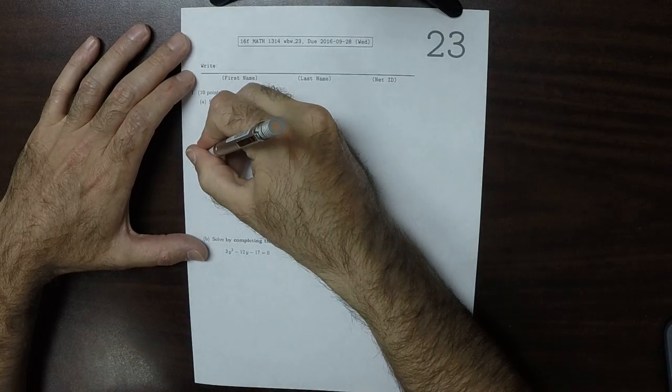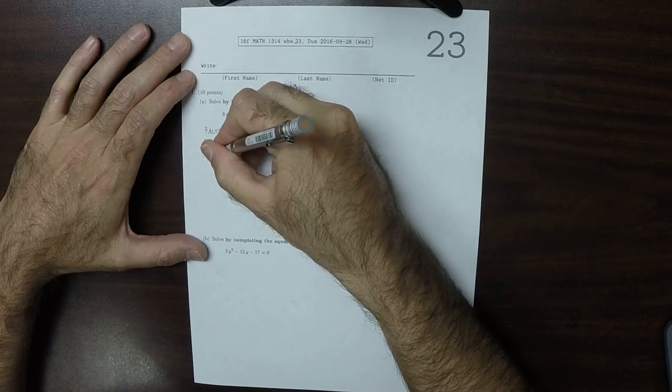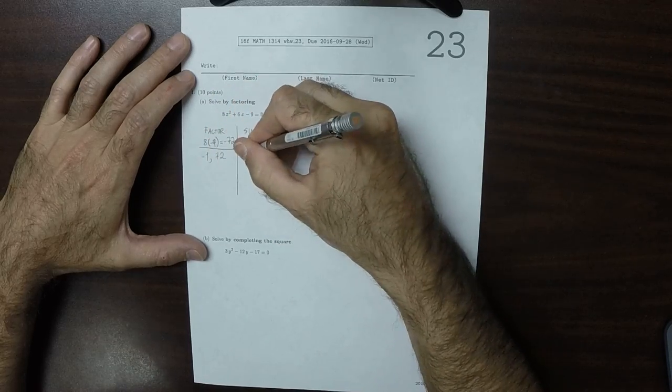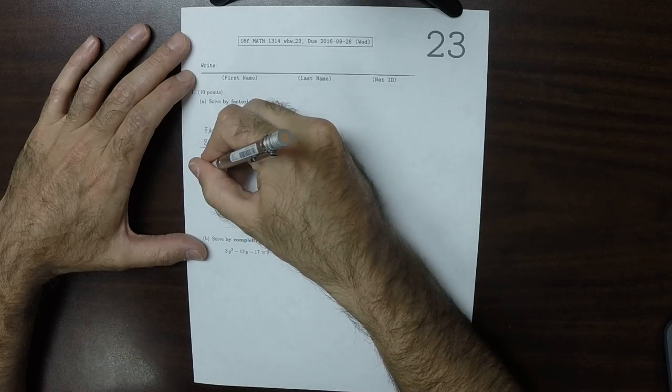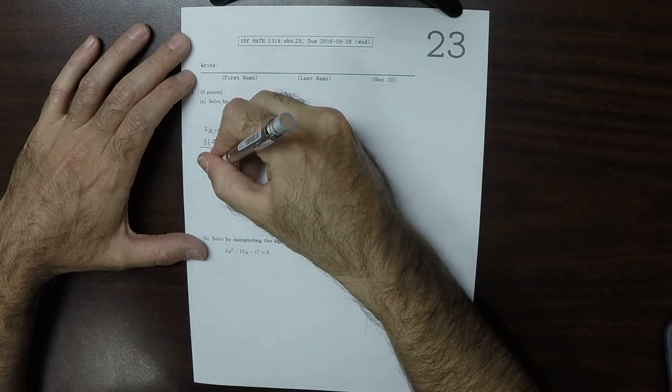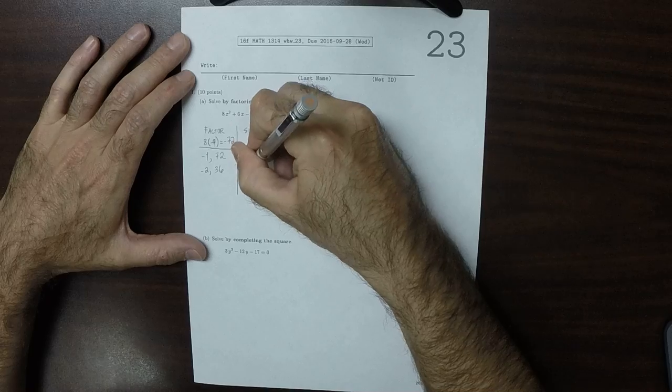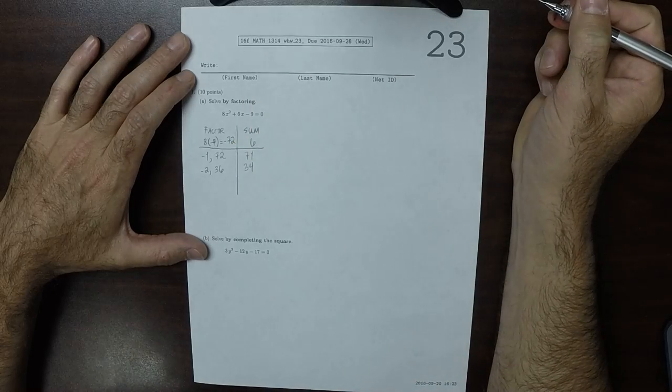So how about negative 1 and 72? That'd be 71, that's definitely not going to work. Negative 2 and 36? So that'd be 34, that's not going to work.